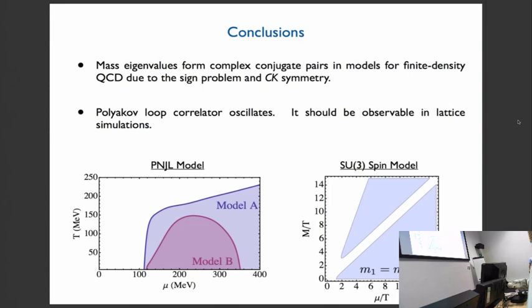So this is the conclusion. The mass eigenvalues form complex conjugate pairs in models for finite density QCD due to the sign problem and CK symmetry. And as a consequence, Polyakov loop correlator oscillates, and it should be observable in lattice simulations. Thank you.